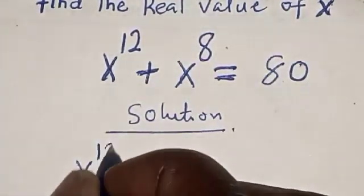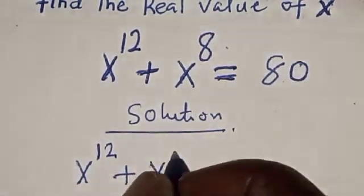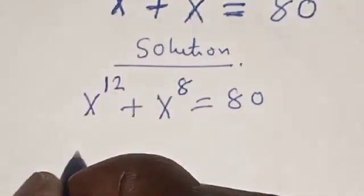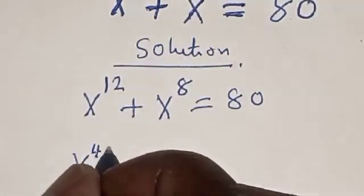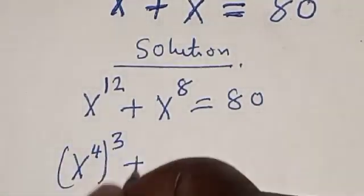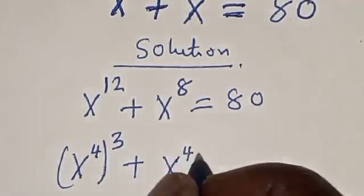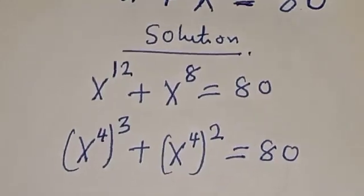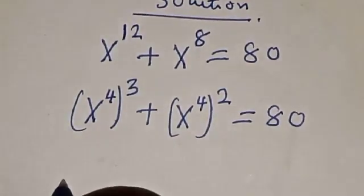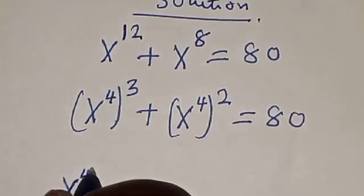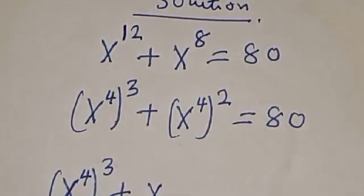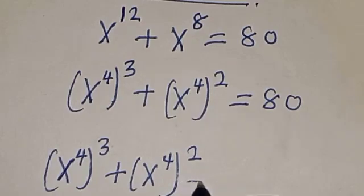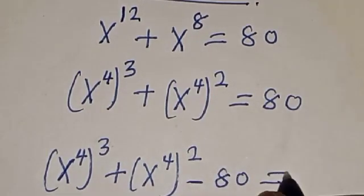We have the given equation: x raised to power 12 plus x raised to power 8 is equal to 80. This is the same thing as x raised to power 4, raised to power 3, plus x raised to power 4, squared, is equal to 80. Now we have x raised to power 4 cubed plus x raised to power 4 squared minus 80 is equal to zero.